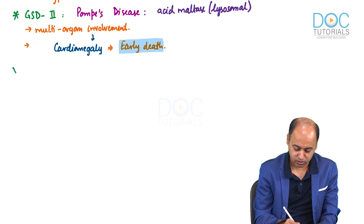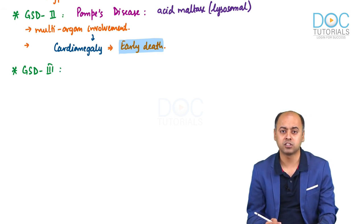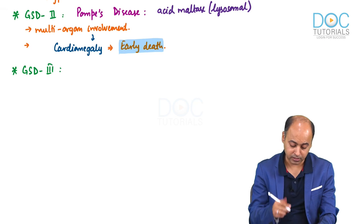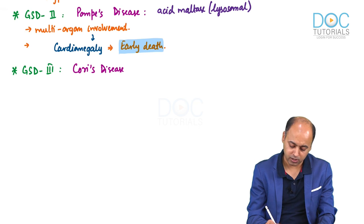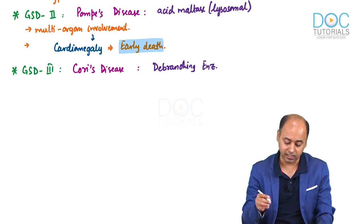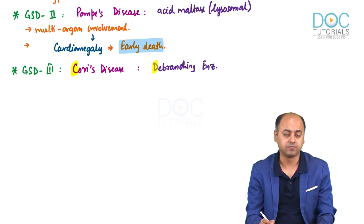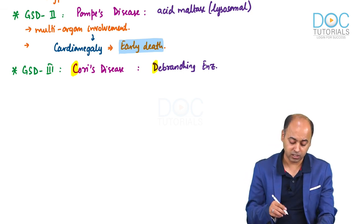Moving on to GSD type 3, known as Cori's disease. Here the deficient enzyme is the debranching enzyme, which is defective in both liver and muscle. How to remember? Third disease, third letter — Cori's — and C is followed by D, so the debranching enzyme is defective in Cori's. When the debranching enzyme is not working, glycogen breakdown will get blocked at the branch site, because the glucose attached by alpha-1,6 linkage must be resolved by the debranching enzyme.